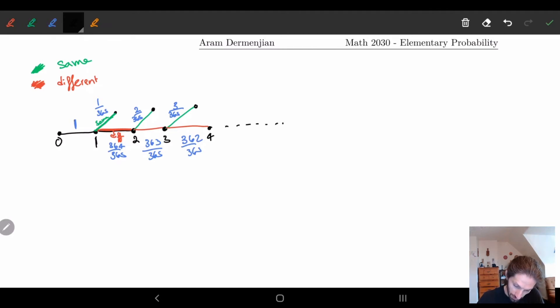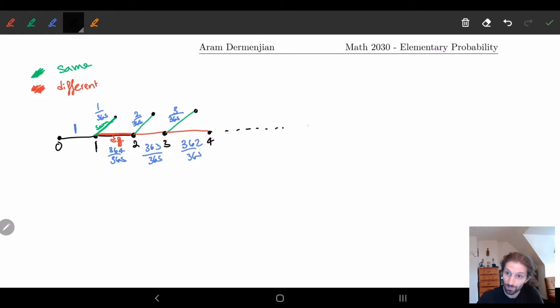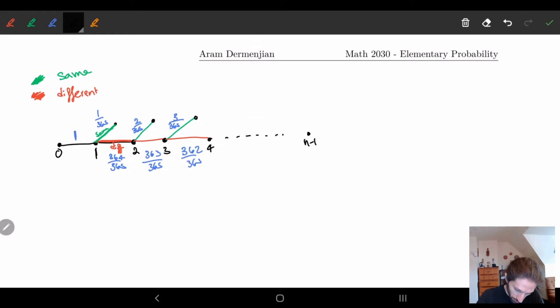We can keep doing this all the way up until the nth person. When we get to the n-1 time we would have n-1 over 365 or if it's different we would get 365 minus n-1 over 365.